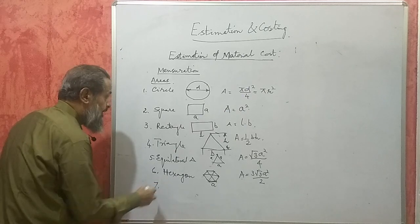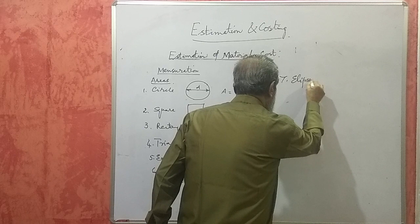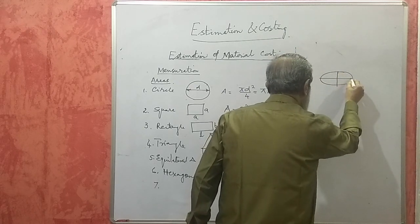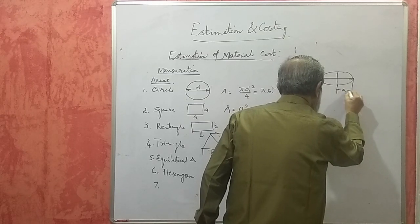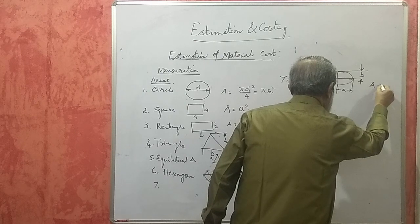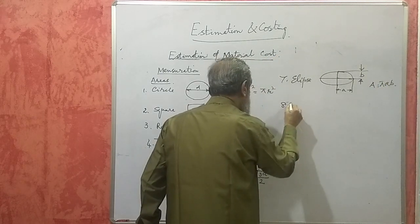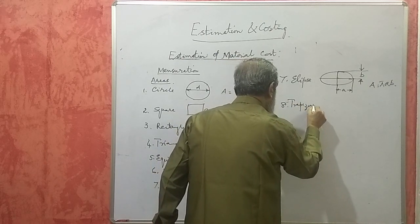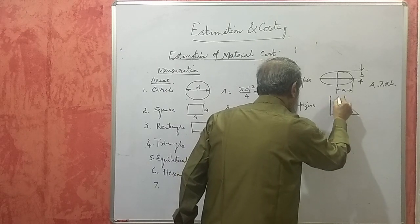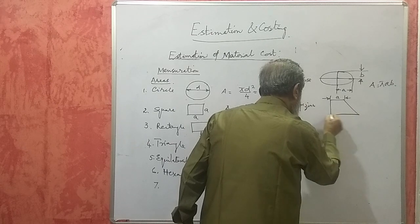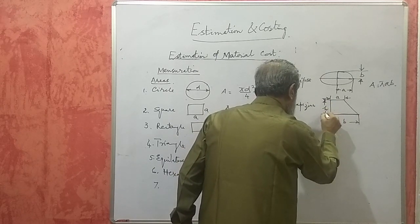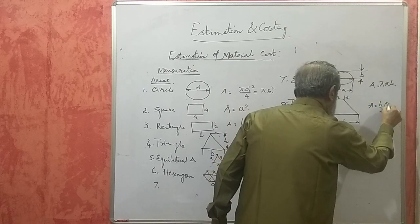Then, if it is an ellipse — an ellipse has a major axis and a minor axis. The semi-major axis is called a and the semi-minor axis is called b. If you know these two, the area will be equal to π × a × b. Then, if it is a trapezium — a quadrilateral in which one pair of sides are parallel — with parallel sides a and b and vertical distance h, the area will be (h/2) × (a + b).